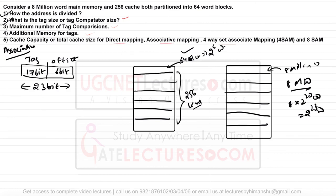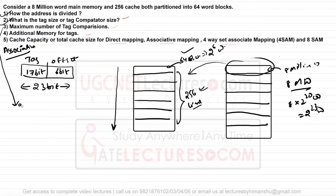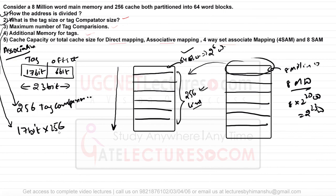In direct mapping, each block maps to exactly one cache line. In associative mapping, any block can be placed in any line, so in the worst case we must compare the tag with every line. Since there are 256 lines, the maximum number of tag comparisons is 256. Additional memory for tags = 17 bits × 256 lines, then divide by 8 to convert to bytes.